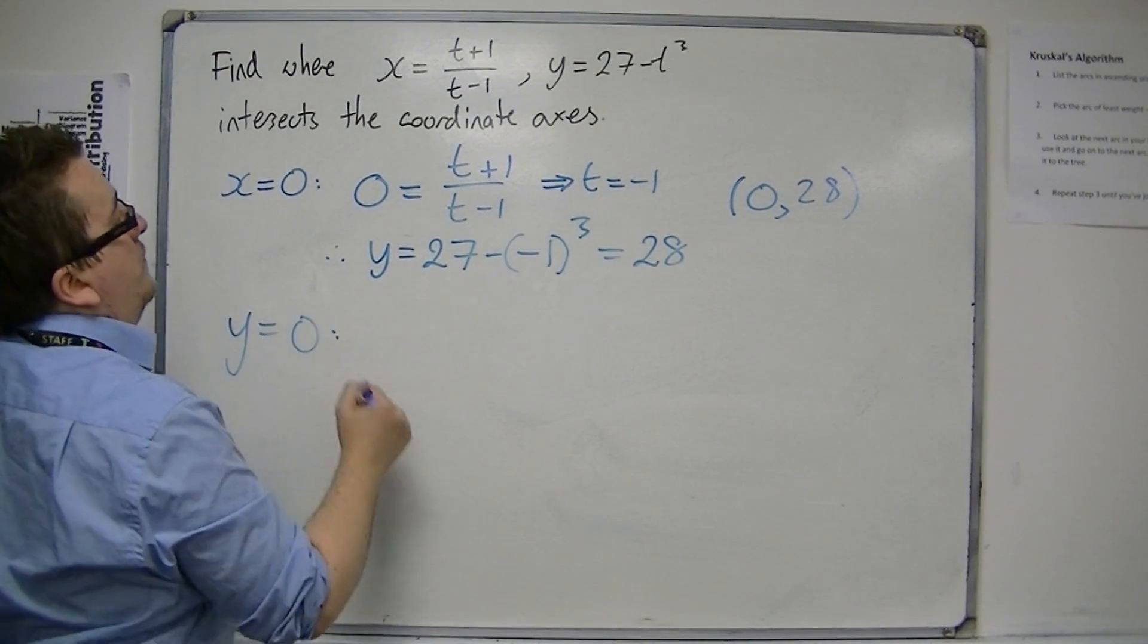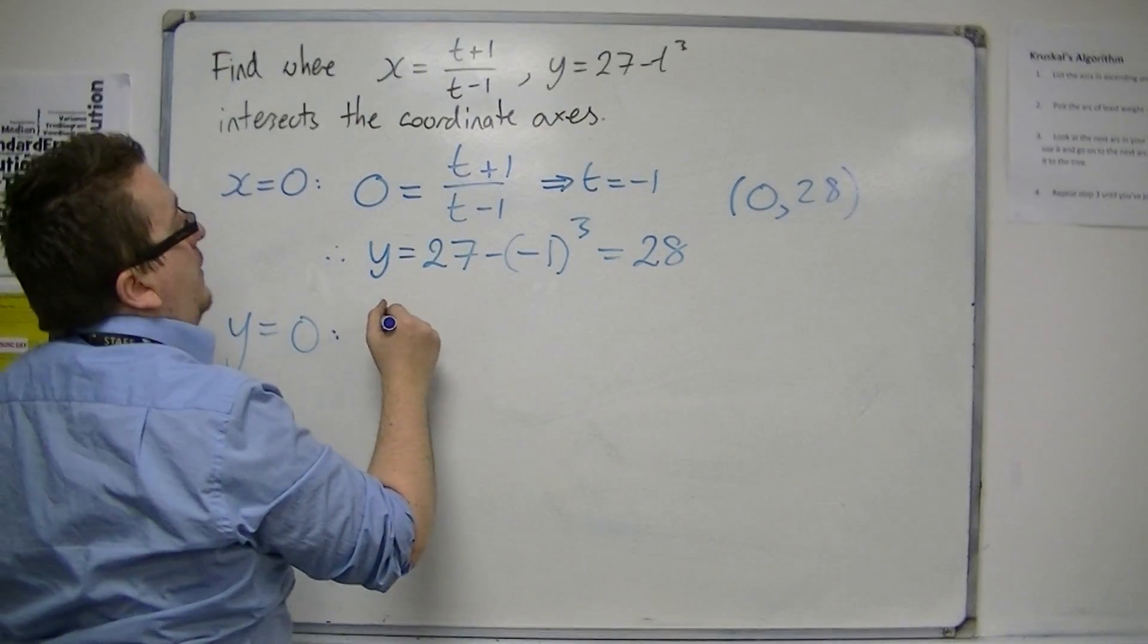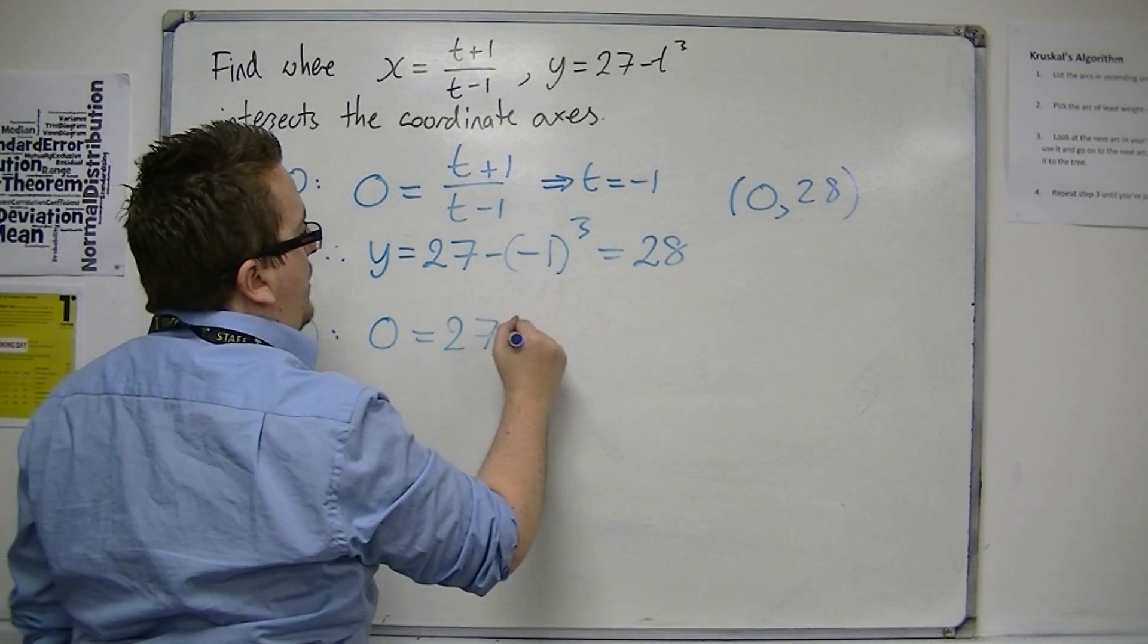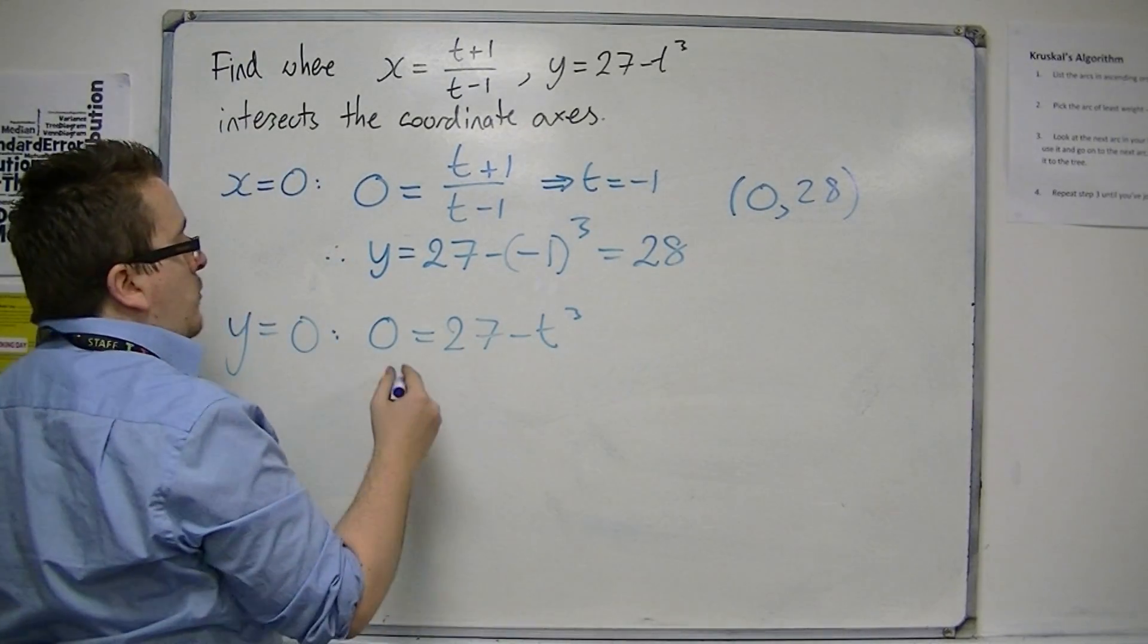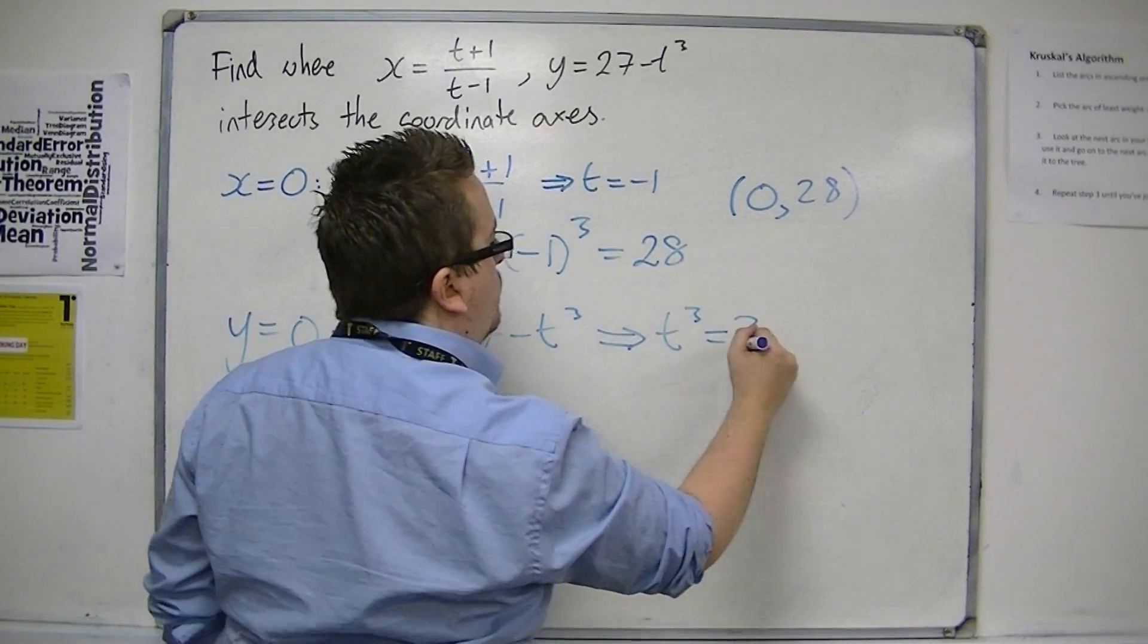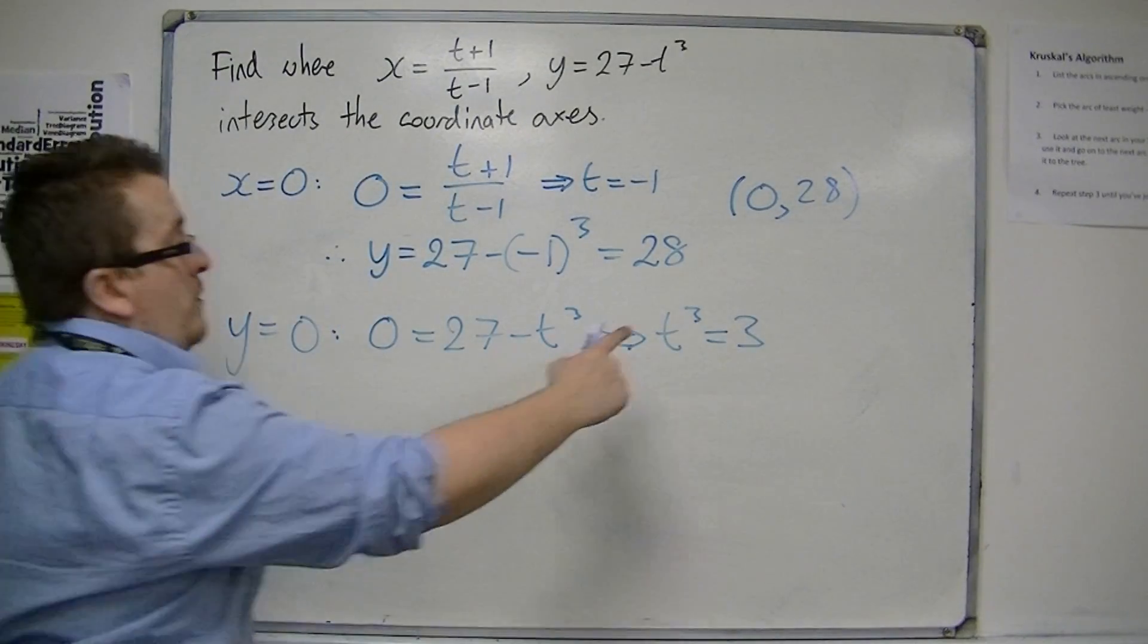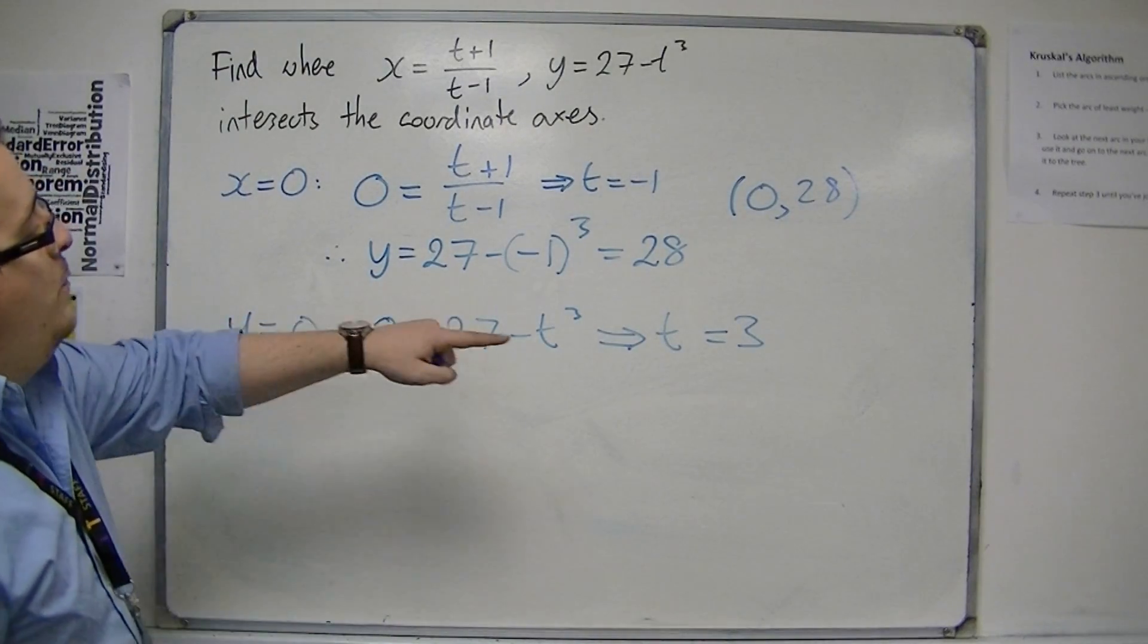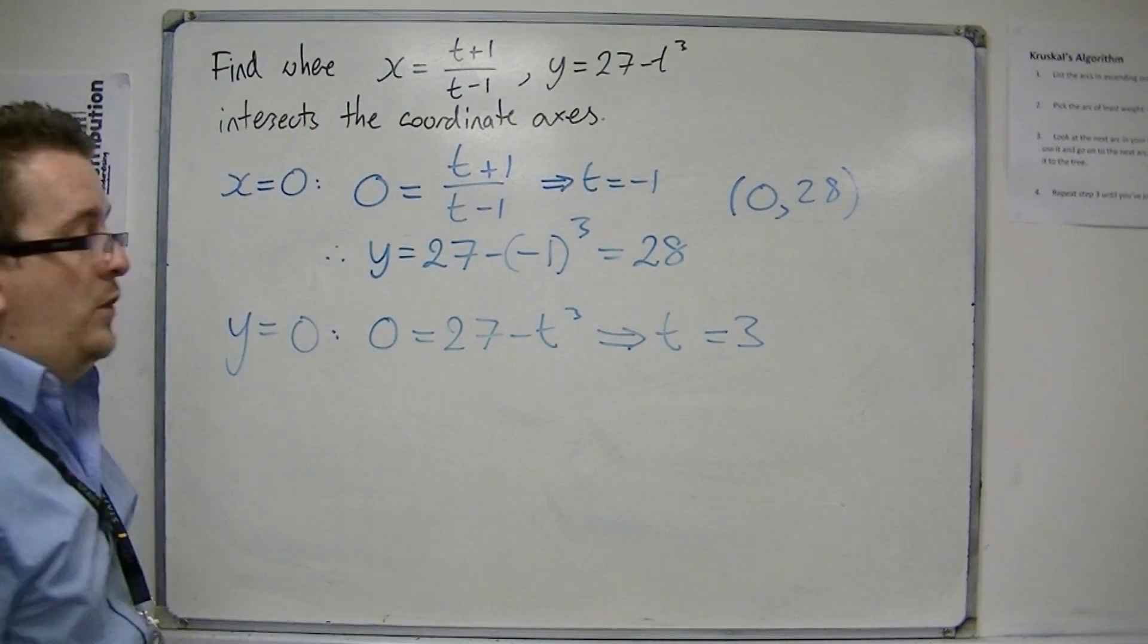When y is 0, we've got 0 is 27 minus t cubed. Rearrange that so that t cubed must be equal to 3. That's t, sorry, is equal to 3, not t cubed.